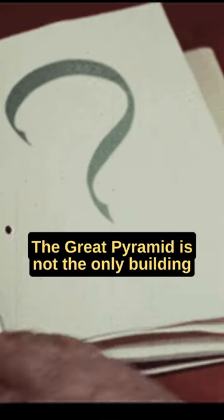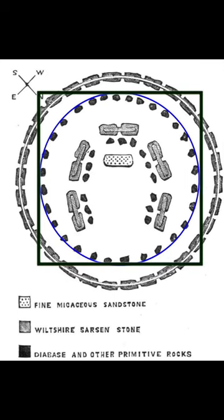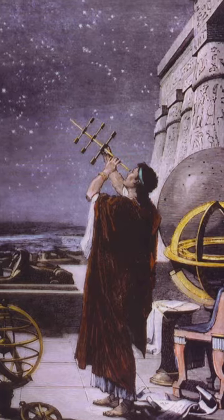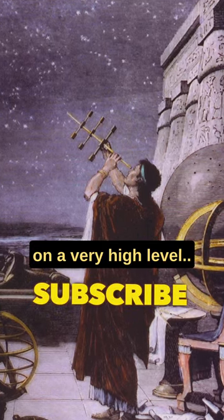The Great Pyramid is not the only building containing these proportions. Stonehenge refers to the same problem. If we don't believe that this is coincidence, we will have to admit that somebody was here who understood the proportions of our solar system on a very high level.